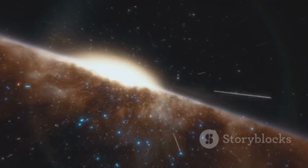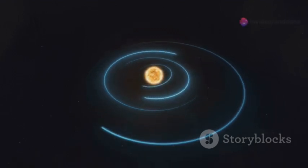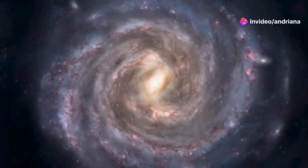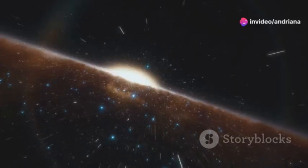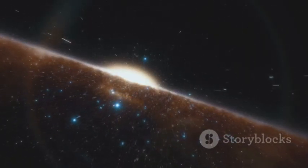But where exactly in this arm is our sun? Our star is situated about 27,000 light-years away from the galactic center. That's roughly halfway between the center of the galaxy and its outer edge. If the Milky Way were a CD, our sun would be located around the middle of one of the tracks.